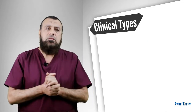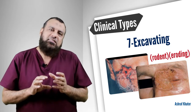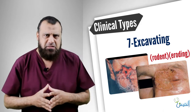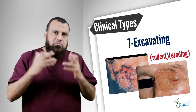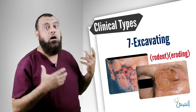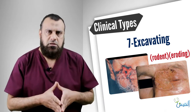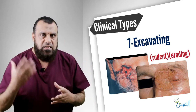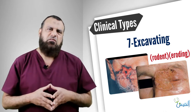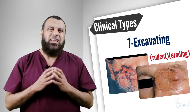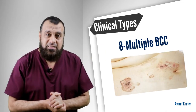Then there is the excavating type, also called the erosive type or rodent type. It tends to invade deeper structures — in the face it will invade the maxilla, may invade the temporal region, may invade the underlying bone, and may even erode the eye. It is very difficult to treat by excision; we may perform orbital exenteration or maxillectomy to achieve a good safety margin. It is a very bad type.